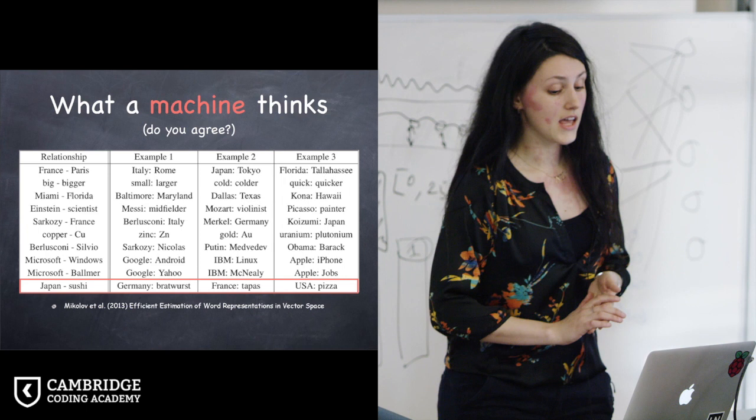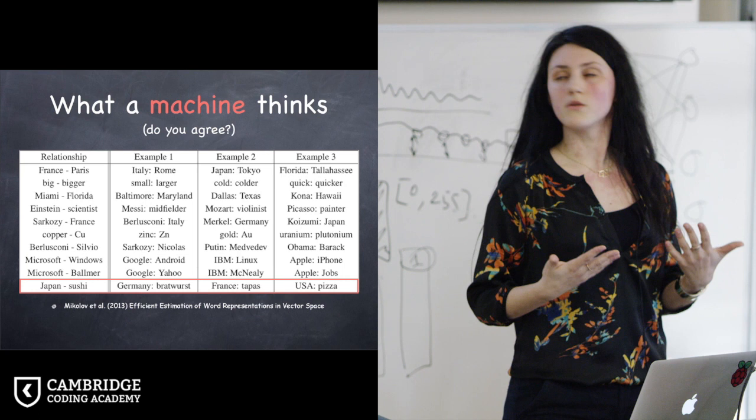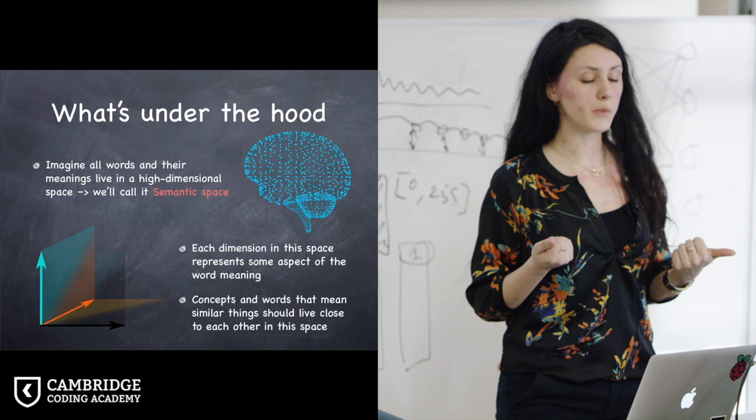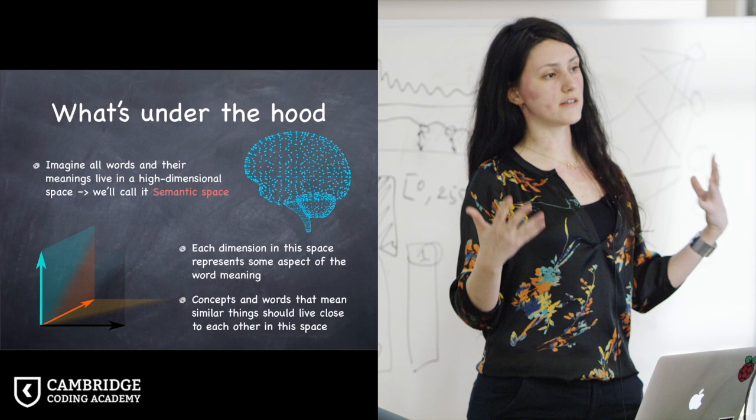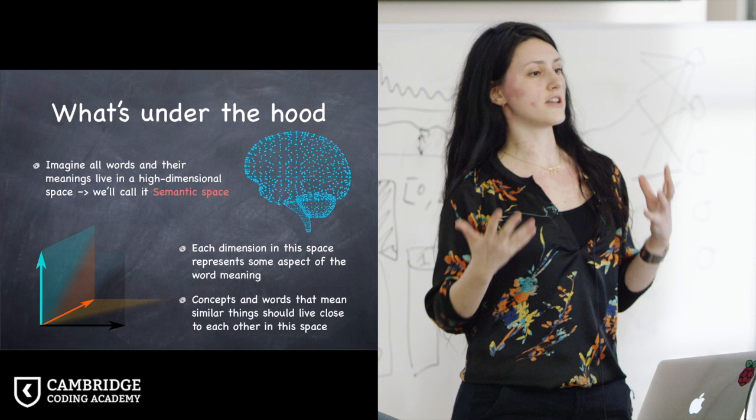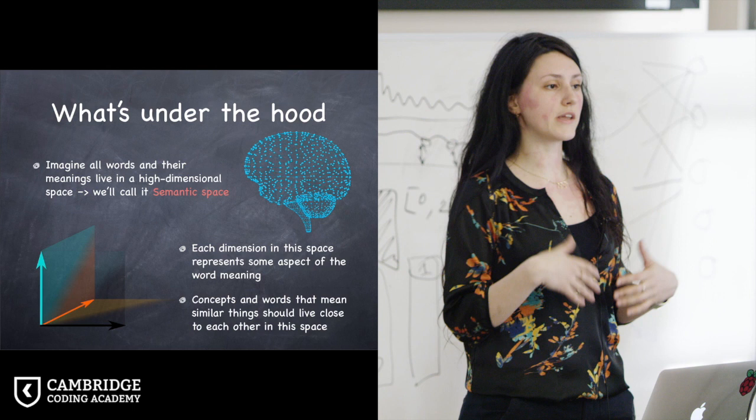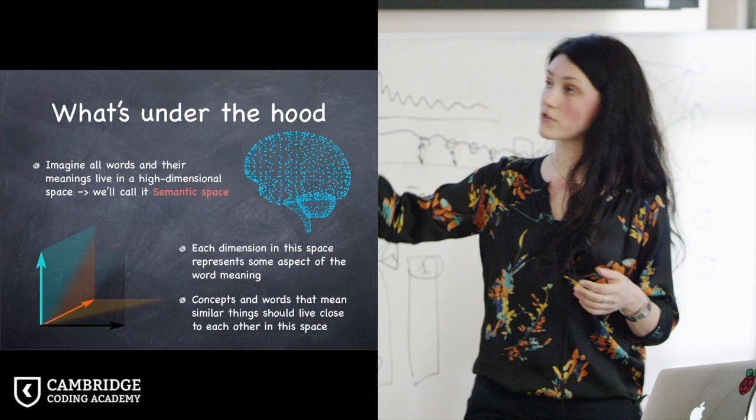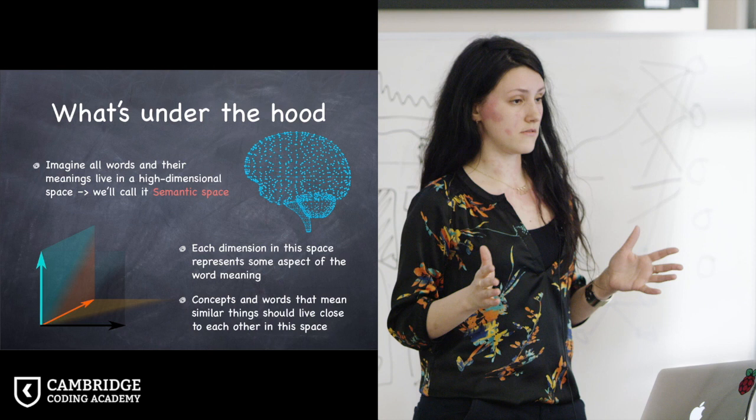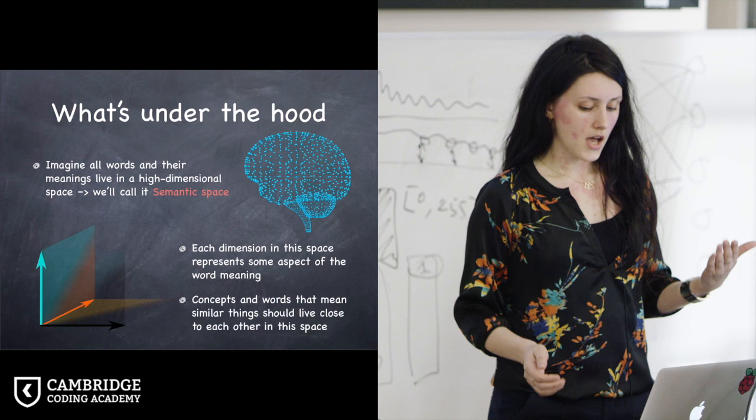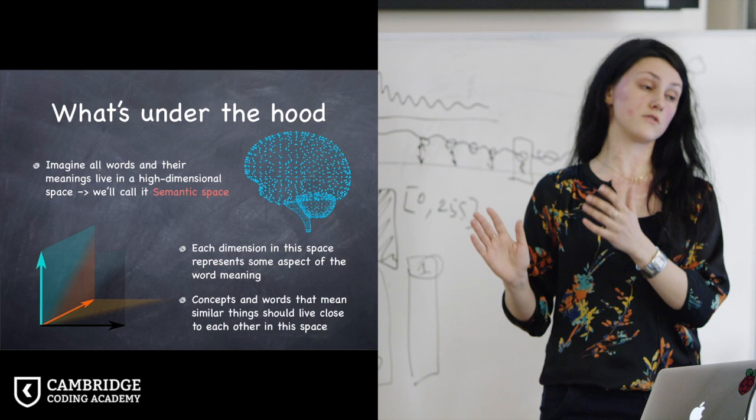If we want to know a little bit how the machine performs these tasks, how it gets the representation of the words, we can think of that as a multi-dimensional space where all the words and all the meanings live. So imagine in your brain, for example, you have these representations of the words and you also know that similar words live somewhere close together. We can kind of replicate that in terms of mathematical structures and recreate that as this multi-dimensional space.